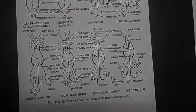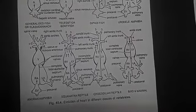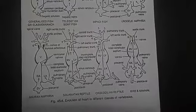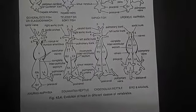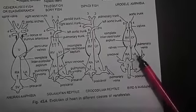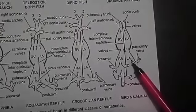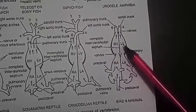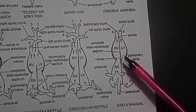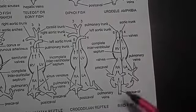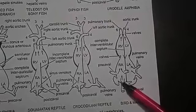Further advancement in heart occurred and it becomes completely four-chambered double-circuit heart in aves and mammals, that is birds and mammals. Auricle and ventricle are completely divided. See, the right auricle, left auricle. The ventricle is also divided completely, right ventricle and left ventricle. The sinus venosus disappears. It is completely incorporated into right auricle.